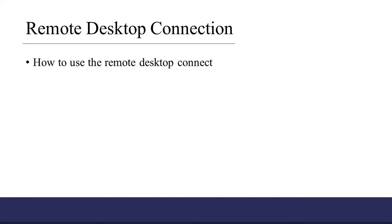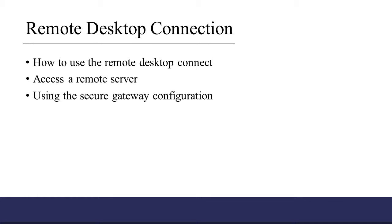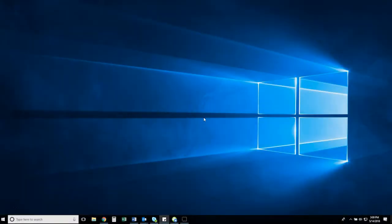In this training video, we're going to show you how to use the Remote Desktop Connection to access a remote server using the secure gateway configuration. You can create a shortcut on your desktop that will automatically connect to your server without the need of a VPN connection. This method can be used anywhere, regardless if you're at a home office or traveling.